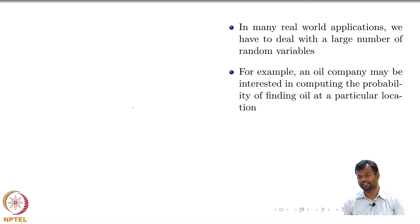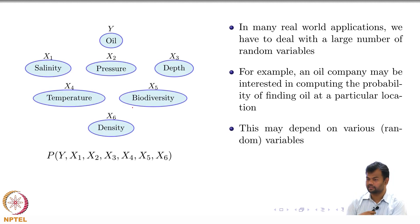We will go back to our favorite example of mining oil. I want to become a billionaire someday and this job is not going to make me a billionaire. So I have to find out an algorithm to drill oil from some place. For example, an oil company is interested in finding the probability of locating oil or finding oil at a particular location and this can depend on various random variables.